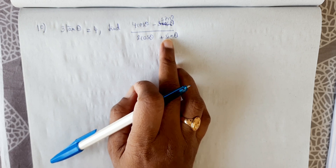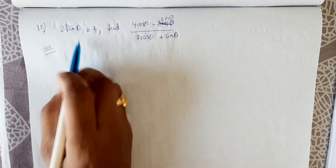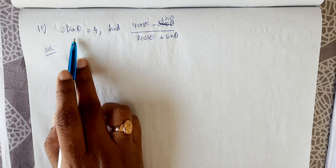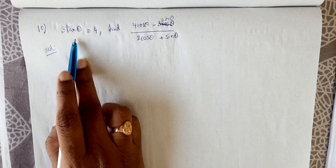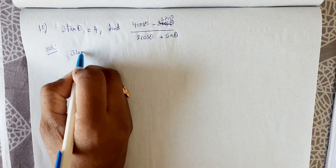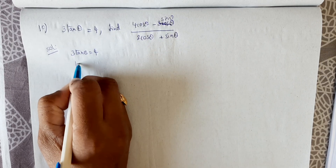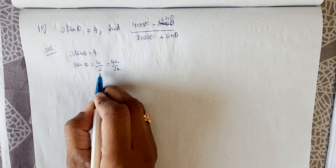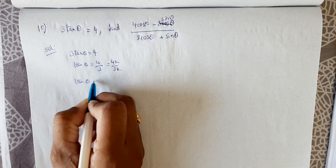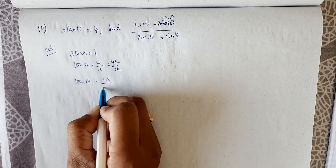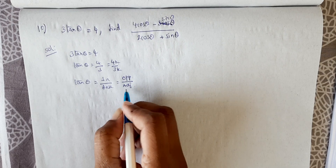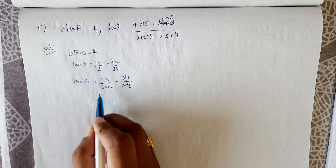The approach: first find tan θ by transposing 3 to the RHS, giving tan θ = 4/3. Since it's in ratio form, write it as 4k/3k. Recall that tan is defined as perpendicular over base, or opposite side over adjacent side.